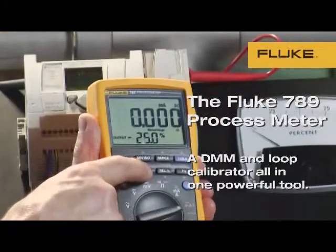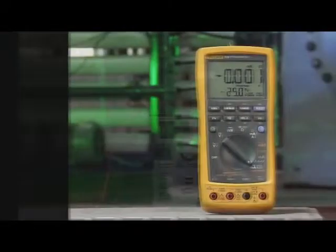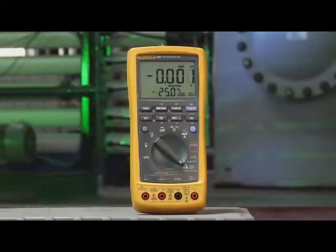The Fluke 789 process meter is the combination of a 4 to 20 milliamp loop calibrator and a CAT IV 600 volt safety rated DMM with an oversized display.